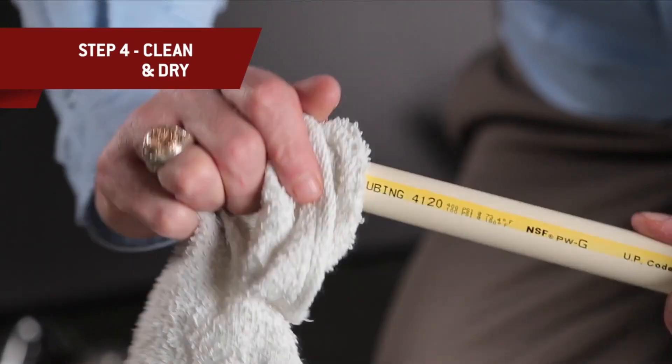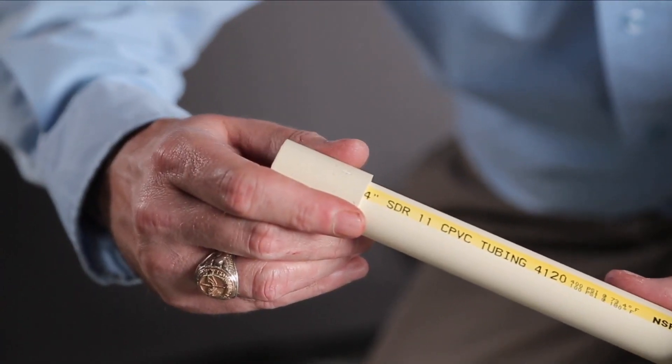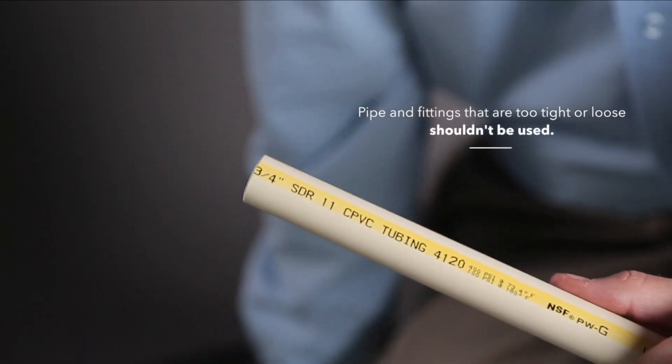Clean and dry the pipe and fittings. Do a dry fit. With light pressure, the pipe should go one-half to two-thirds of the way into the fitting hub. Pipe and fittings that are too tight or too loose shouldn't be used.